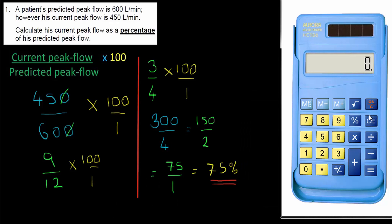So turn it on and clear the memory. We had 450 over 600 times 100 or as I called it times 100 over 1. We don't need to do any simplifying. We can just directly put those numbers into the calculator. 450 divided by 600 times by 100. I can divide by 1 if I want, but I don't need to. And the answer is, as we saw, 75%. Good stuff. On to the next one.